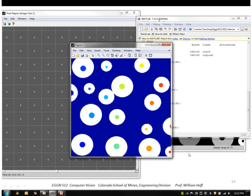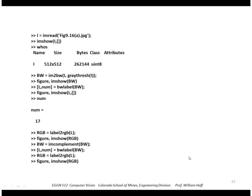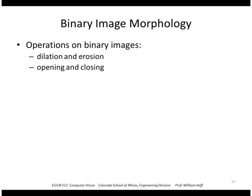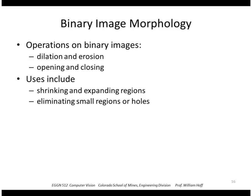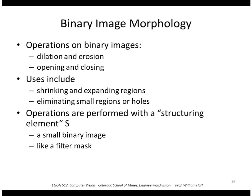Okay, so now we've extracted connected components, we can do some processing on those components. So we're going to look at these operations, dilation and erosion, and opening and closing. So these are useful for shrinking and expanding regions, or eliminating small regions or holes that might be due to noise. And we're going to perform these operations using a structuring element, S, which is really just a small binary image. And it's analogous to a filter mask that we saw in spatial filtering.